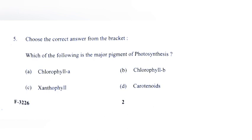Choose the correct answer from the bracket: Which of the following is the major pigment of photosynthesis? Answer: A) chlorophyll a.